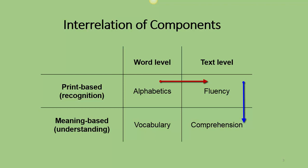Fluency affects comprehension because if you read so slowly, by the time you get to the end of the reading you cannot remember what you read. Vocabulary affects alphabetics because you need to be familiar with the word in order to be able to read it correctly.